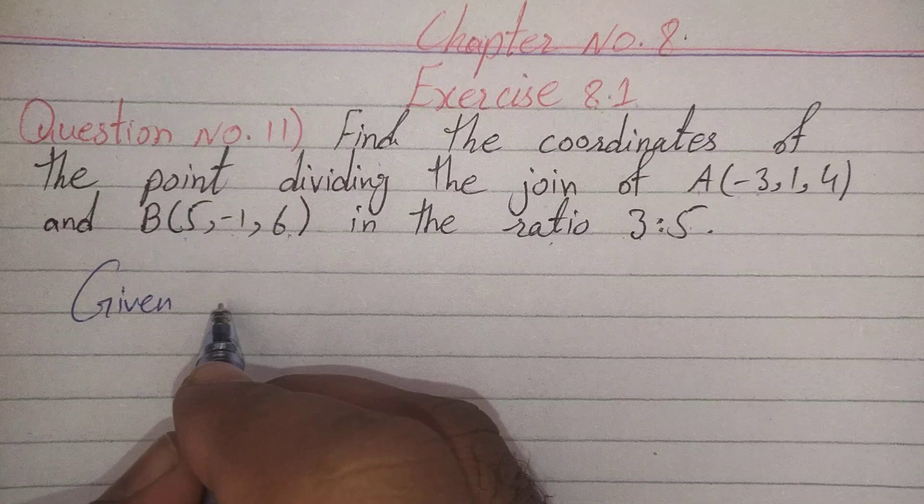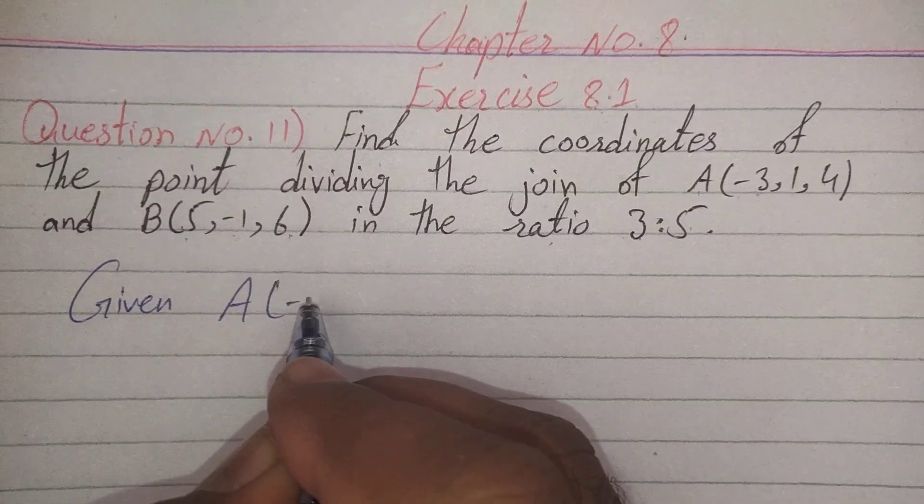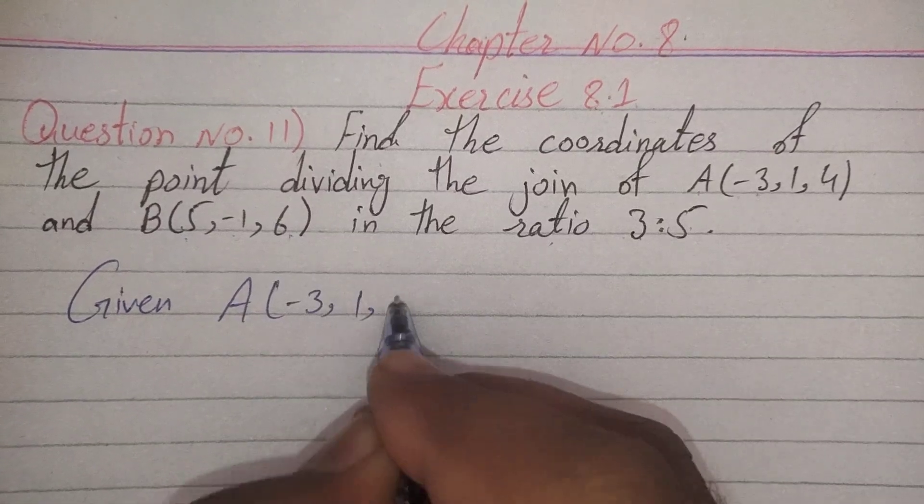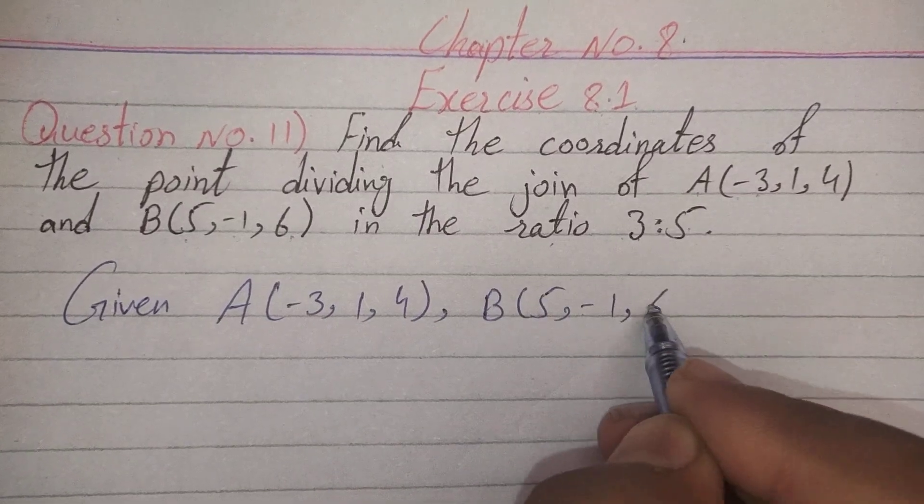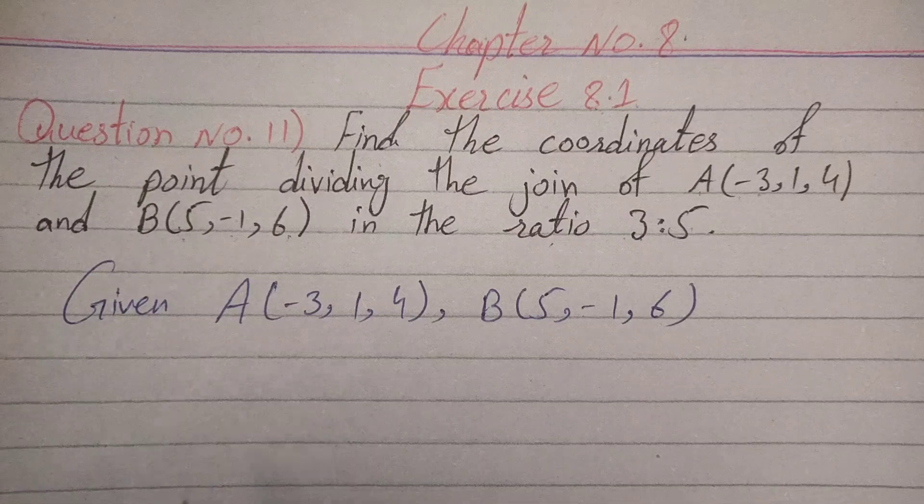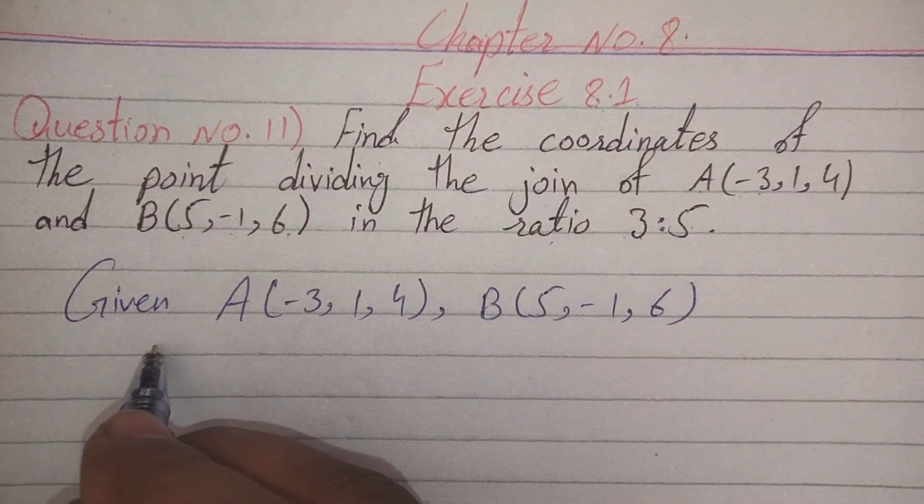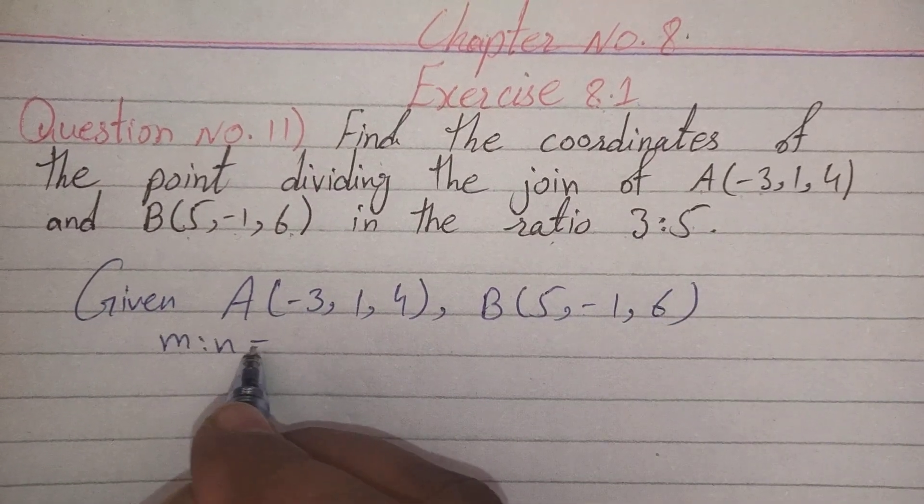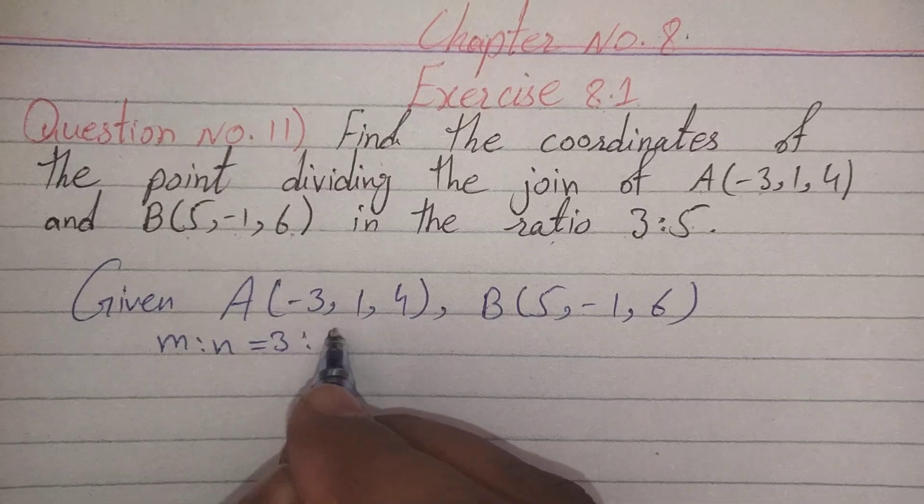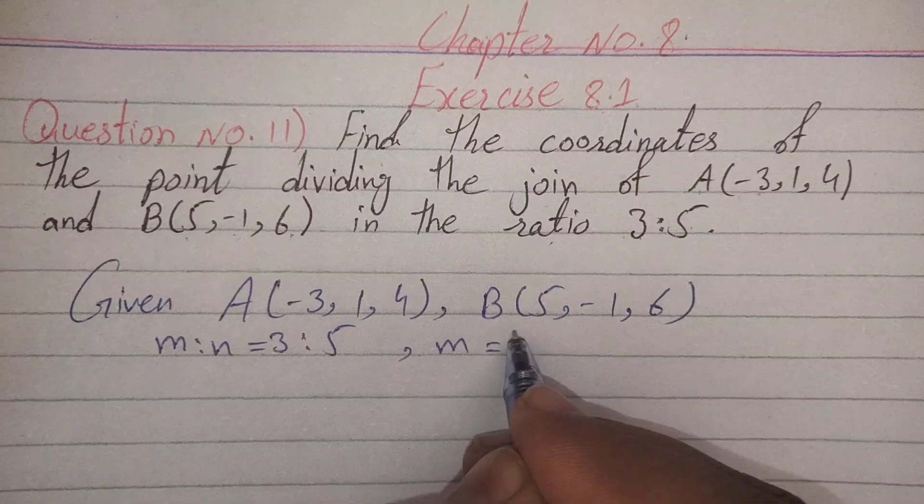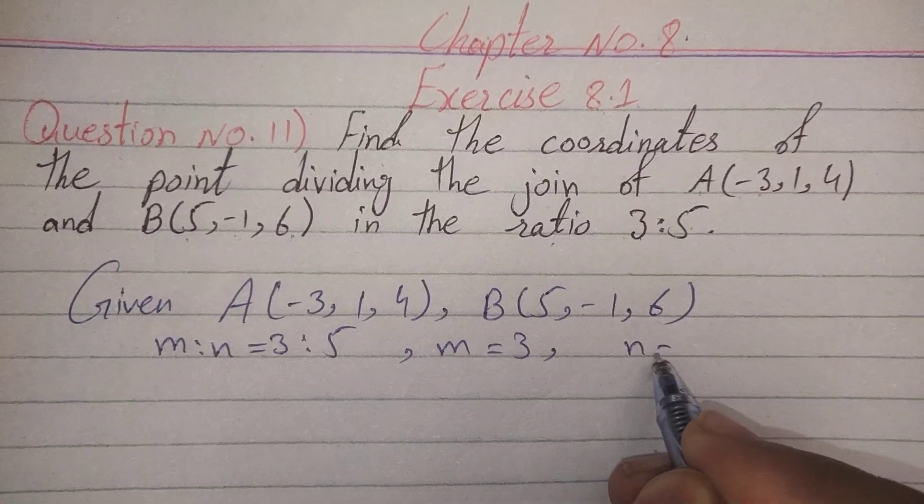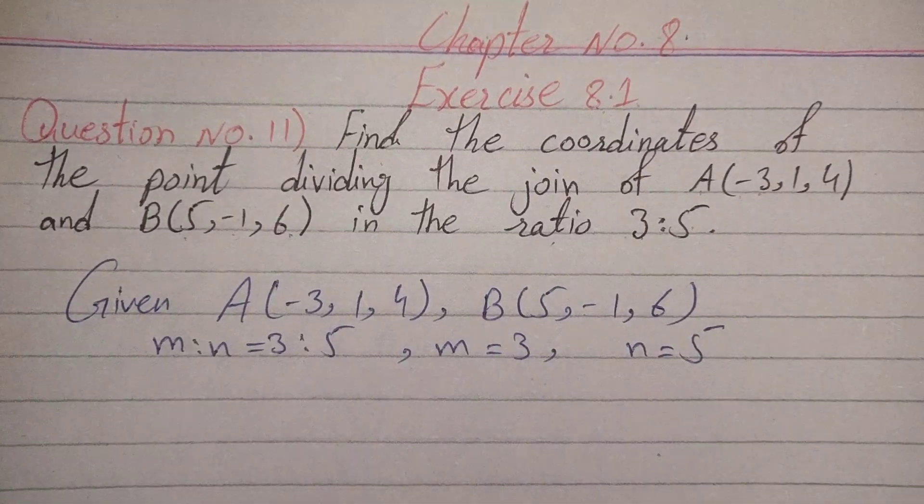Given: point A(-3, 1, 4), B(5, -1, 6), ratio M:N is equal to 3:5, meaning M is equal to 3 and N is equal to 5.